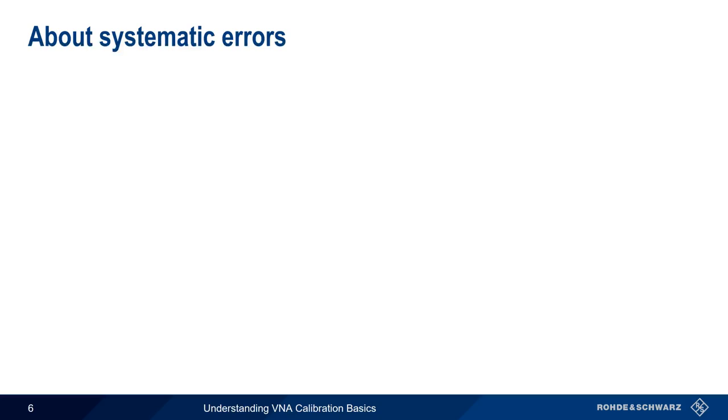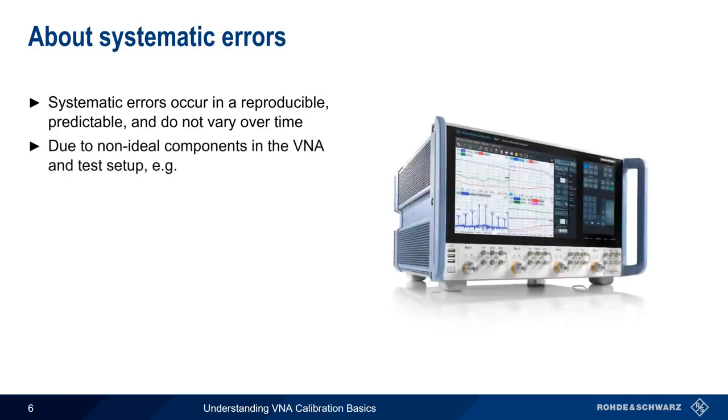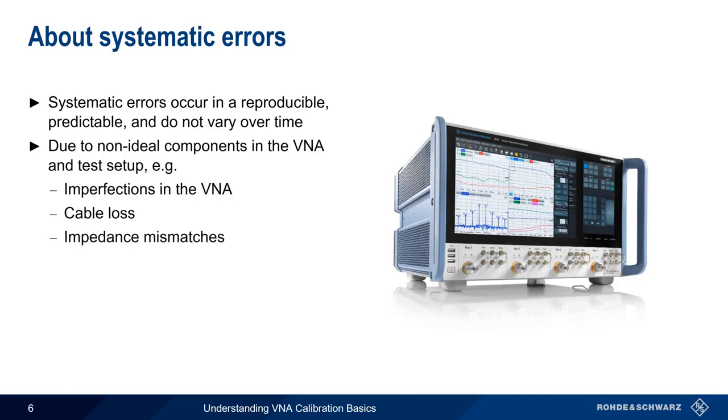Systematic errors differ from both drift and random errors in that they're reproducible, predictable, and time-invariant. This is because systematic errors are primarily caused by non-ideal components within our VNA and within the test setup itself. An example of a systematic error includes imperfections in the VNA, such as directional couplers that aren't perfectly directional. Other examples include cable loss and impedance mismatches. What's different about systematic errors is that systematic errors can be almost entirely removed through calibration.